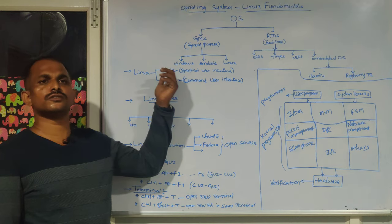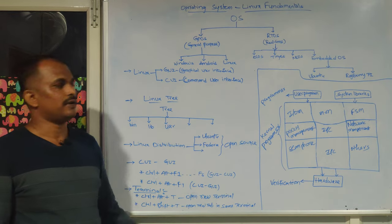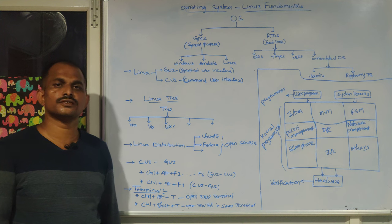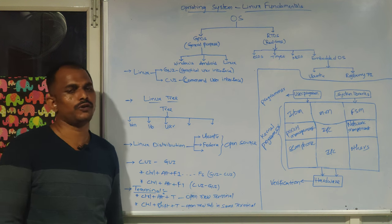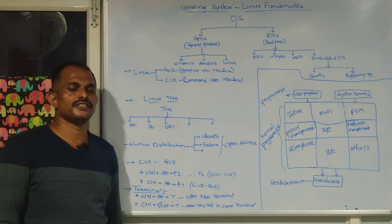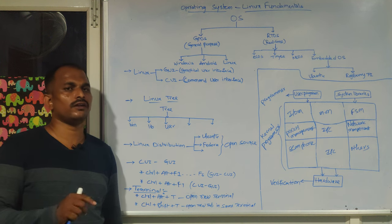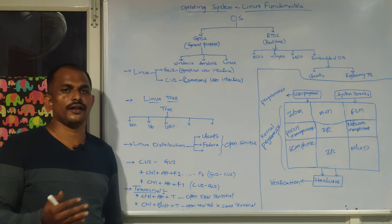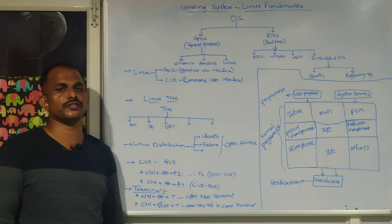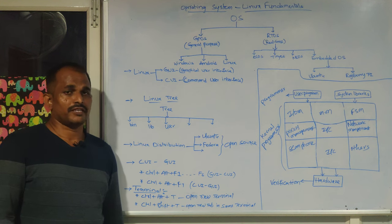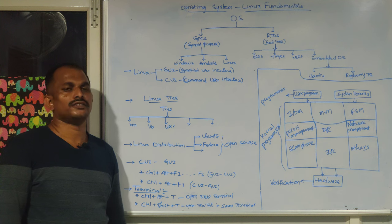Windows mostly operates with GUI, whereas the Linux operating system offers both CUI mode and GUI mode. In GUI mode, clicking on an icon opens or closes items and you can choose respective buttons. In CUI mode, you need to follow a terminal and commands.